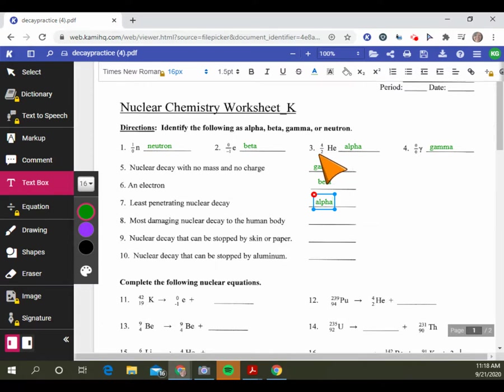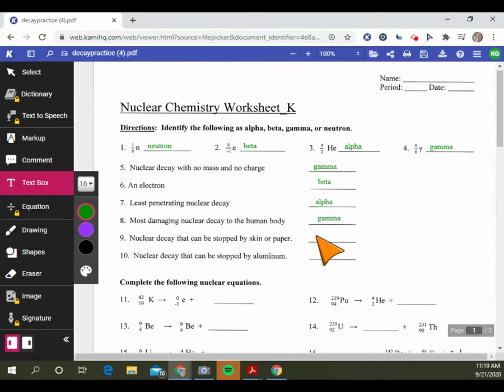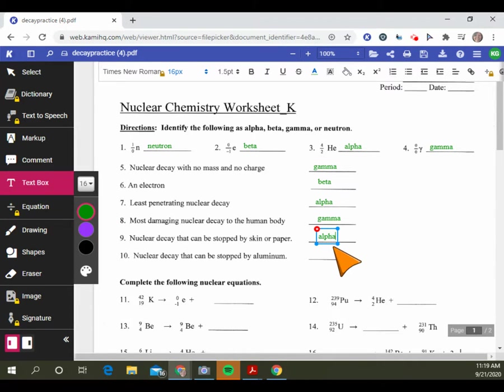Nuclear decay with no mass and no charge is gamma. The most penetrating nuclear decay is alpha decay because if you look at the alpha decay, that is the largest particle. It cannot pass through paper or your skin or a wall. But the most damaging nuclear decay to the human body is gamma because it can penetrate deeper and further than the other kinds.